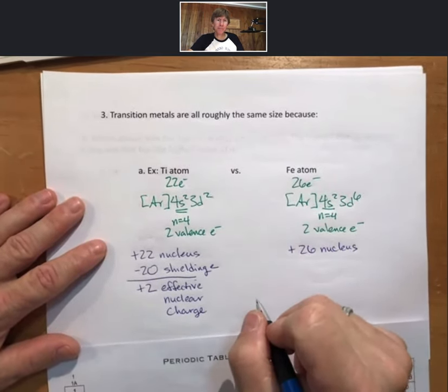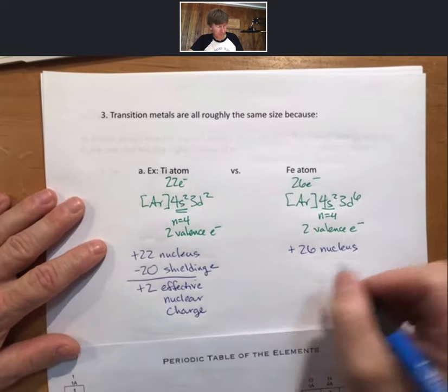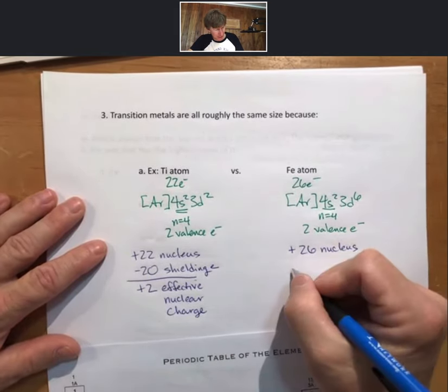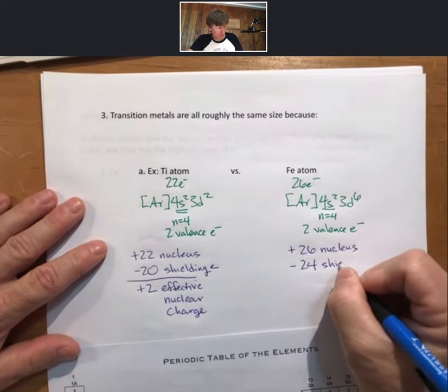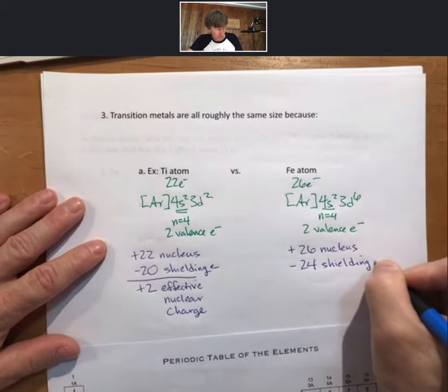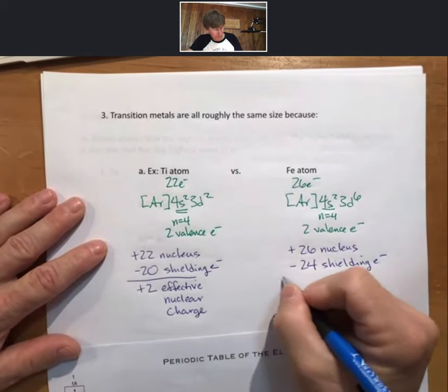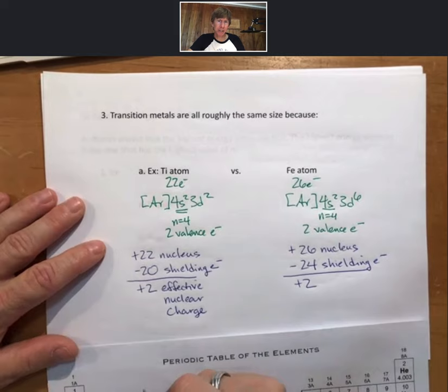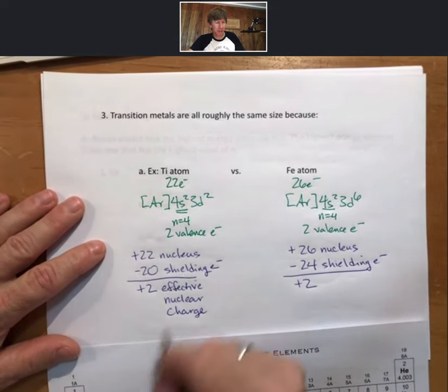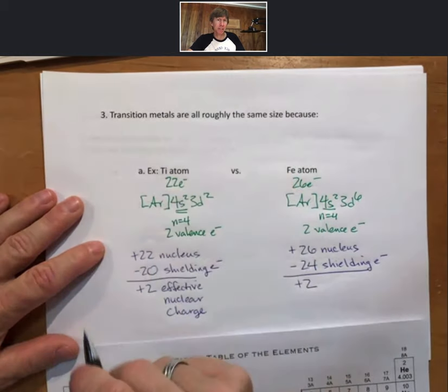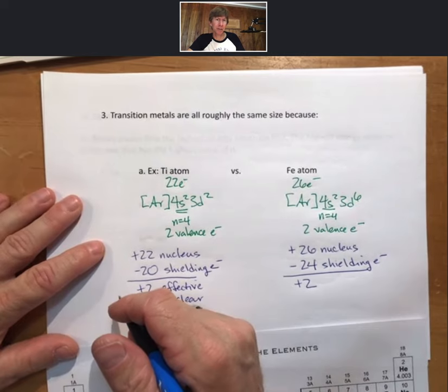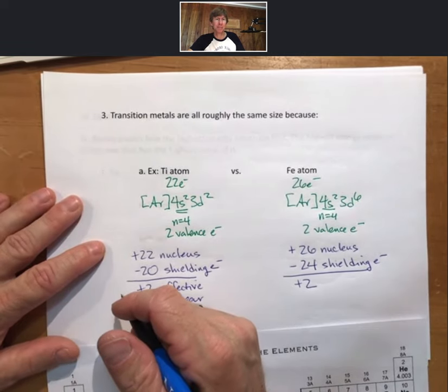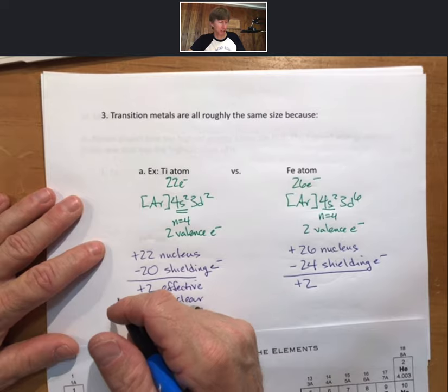For iron, plus twenty-six nucleus, now including the 3d6, minus twenty-four shielding electrons, the same plus two effective nuclear charge. Now there are small variations in the radius, in the size of the transition metals, but that is because this is a simplification of the process, but it is a reasonably good approximation.